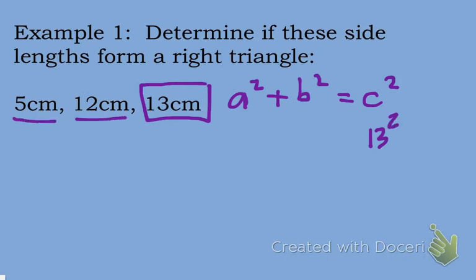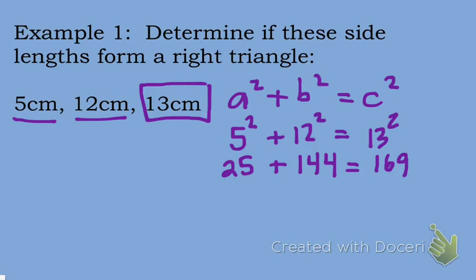5 and 12 are the shorter two sides, and those are called the legs. Remember that a and b are the legs, and it does not matter which one is a and which one is b. So I'm going to put 5 in the a position, and 12 and substitute that in for b. 5² is equal to 25, and 12² is equal to 144. 13² is equal to 169. When I add 25 plus 144, I get 169 is equal to 169. So I know that these dimensions do form a right triangle.